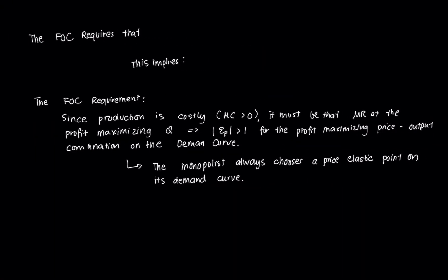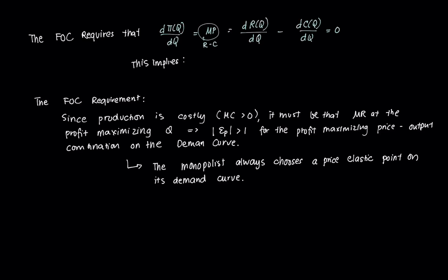The FOC requires that the derivative of profit — which is a function of Q — with respect to Q equals zero. Since profit is just revenue minus cost, marginal profit equals the derivative of revenue minus the derivative of cost. This derivative is marginal revenue and this derivative is marginal cost. Therefore, it implies that MR minus MC equals zero, or MR equals MC.